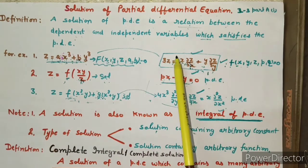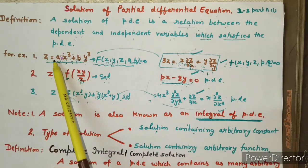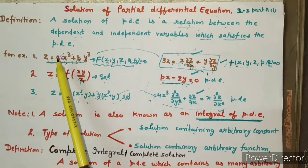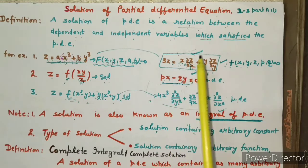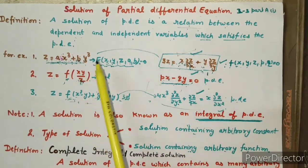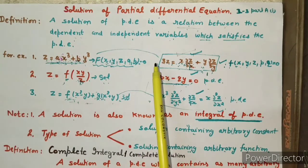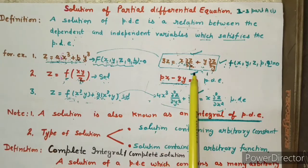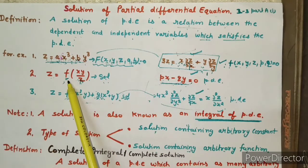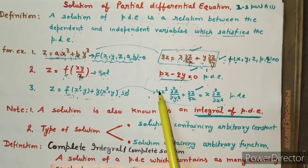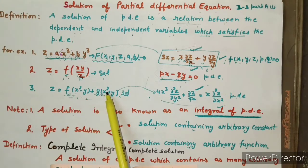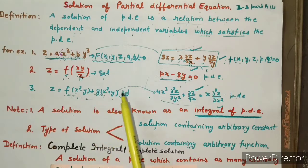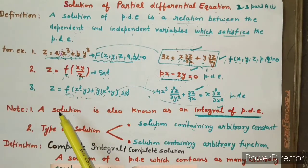This is the equation in formation. In lectures 1 and 2 we discussed this equation. We studied that if the differential equation is formed from a relation with arbitrary constants like A and B, then the solution will take that form. If your differential equation is of higher order, you will get a corresponding solution with two functions, and you will get the order accordingly.